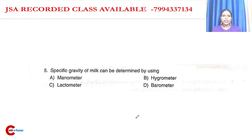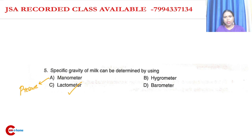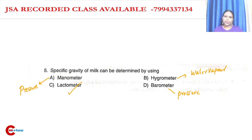Question number five: the specific gravity of milk can be determined using which method? The answer is lactometer — not manometer, not barometer. Answer is lactometer.